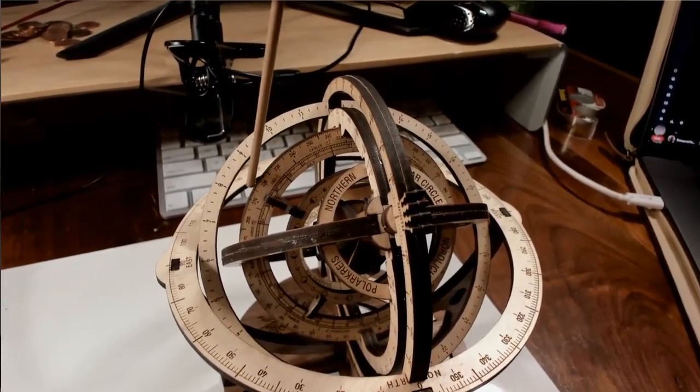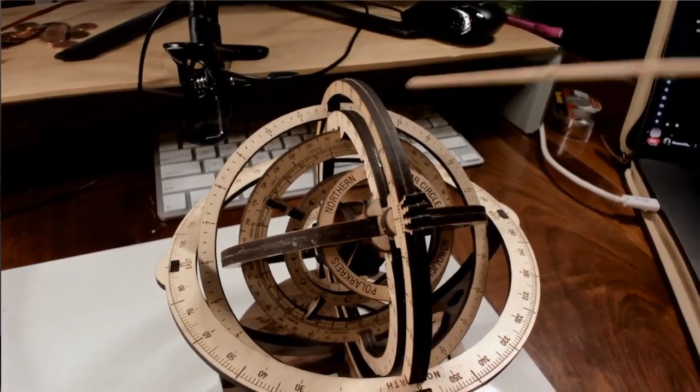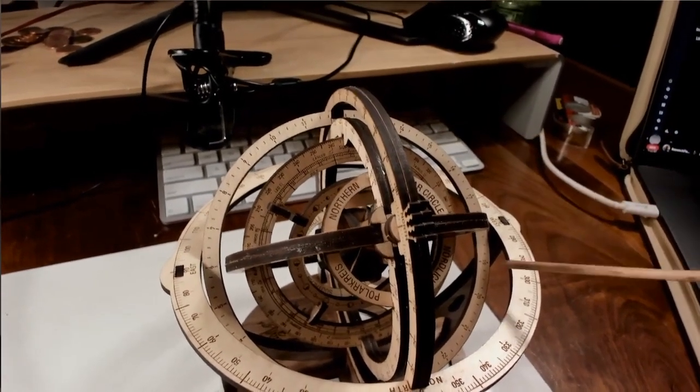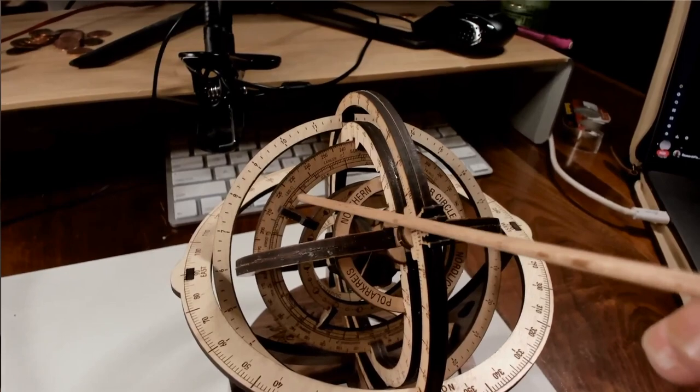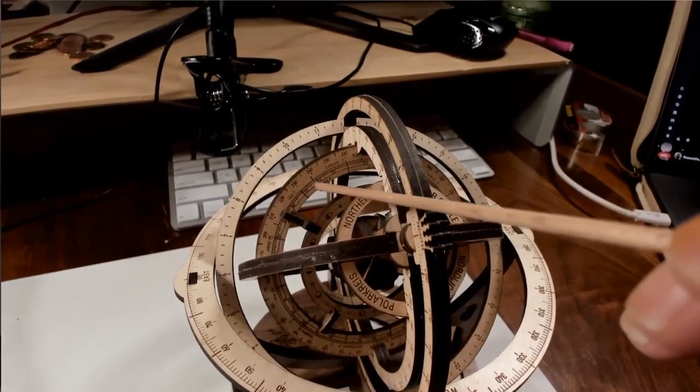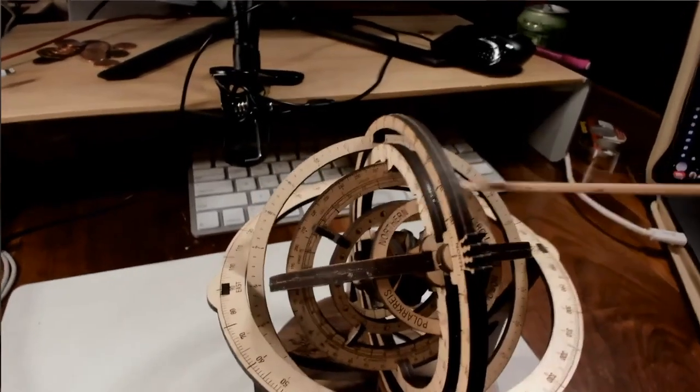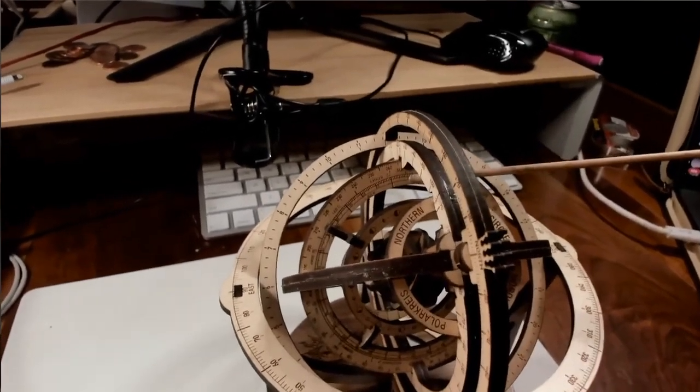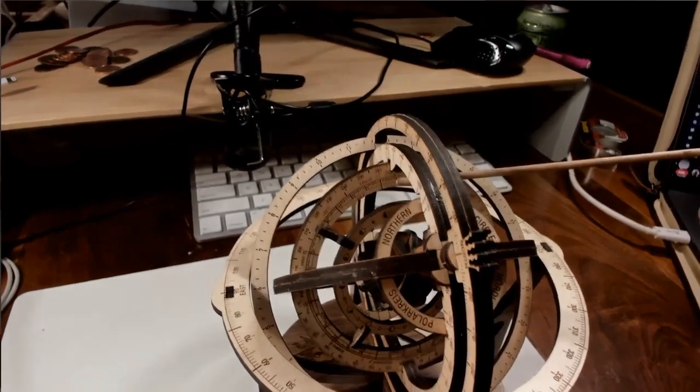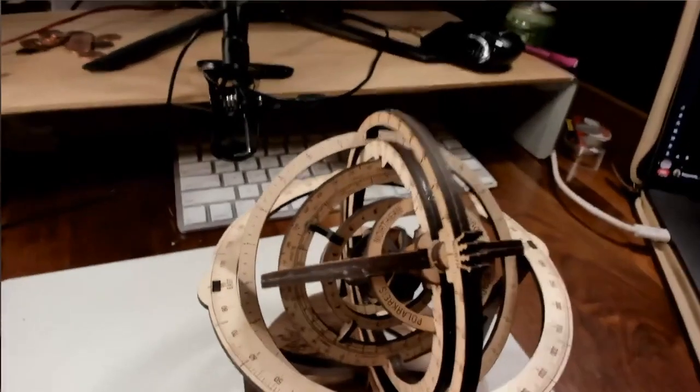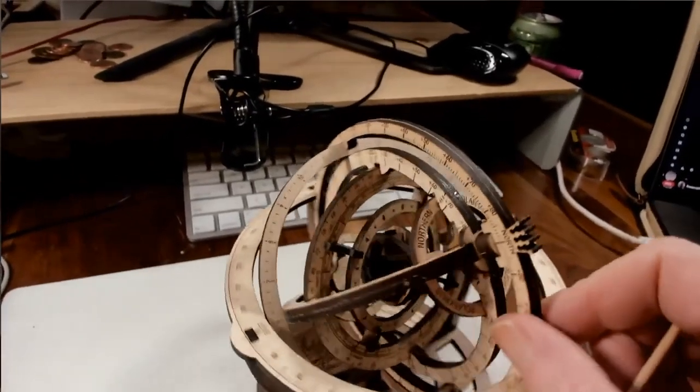This ring right here is called the ecliptic of the sun. So notice that there are dates on the ecliptic ring. For example this would be July 10th. This spot right here underneath our meridian that would be June 21st. Now you'll also notice something else about the ecliptic.